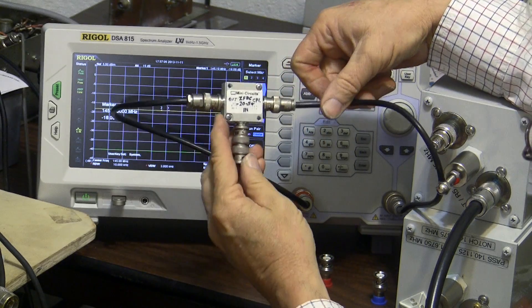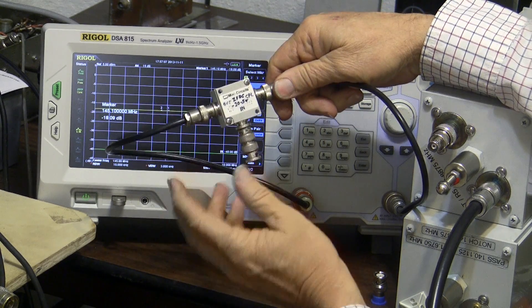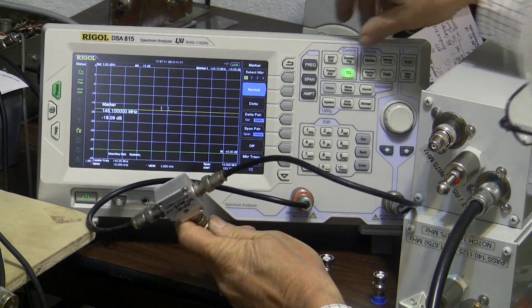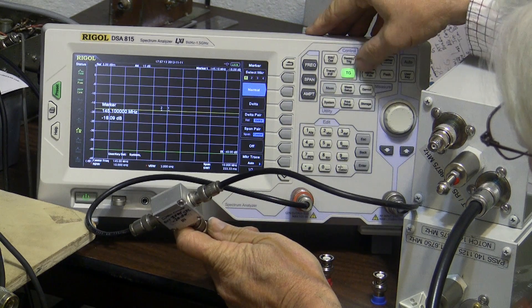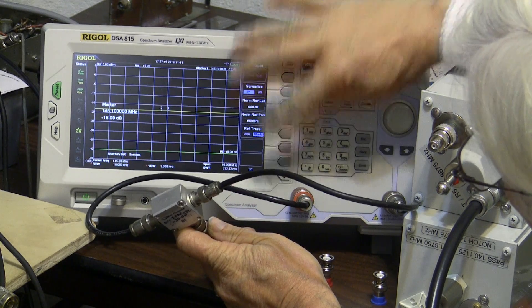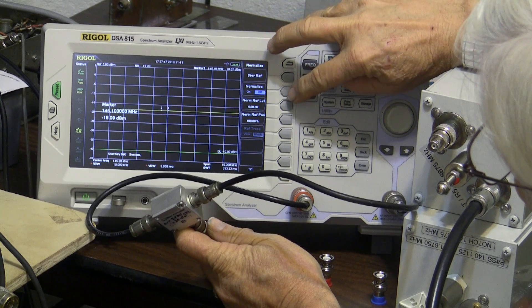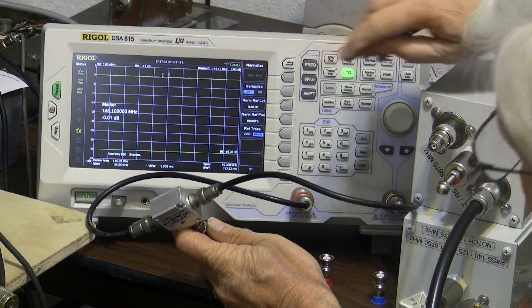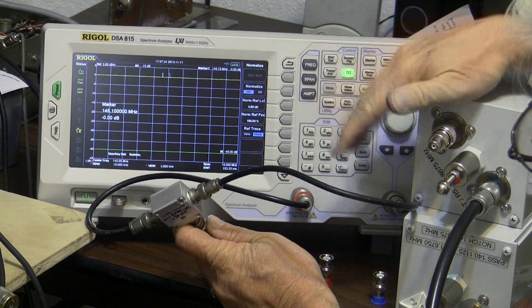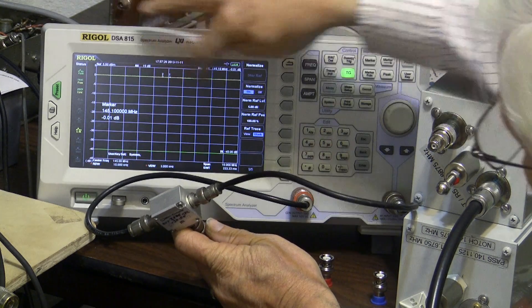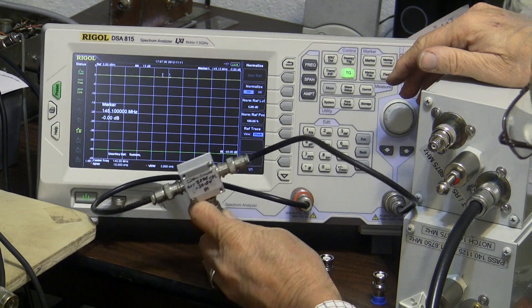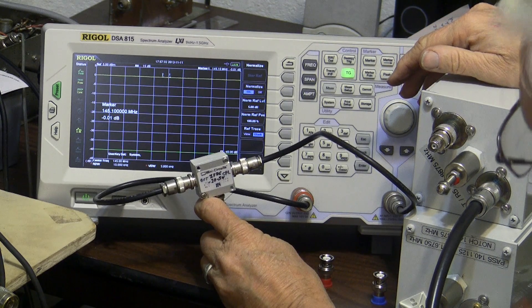If there's nothing on this port, which is open, we can go tracking generator, normalized, turn it off, turn it back on, and it will put it right back up at zero like we had before when we were looking at the pass. So now we're calibrated again for looking at the return loss.